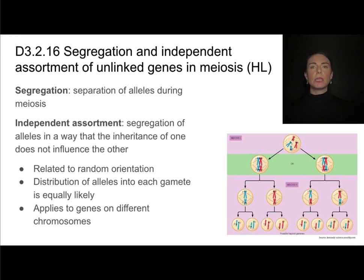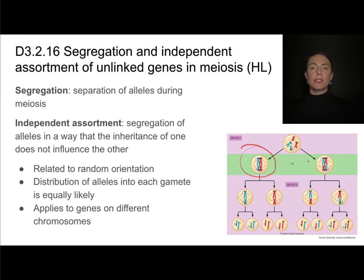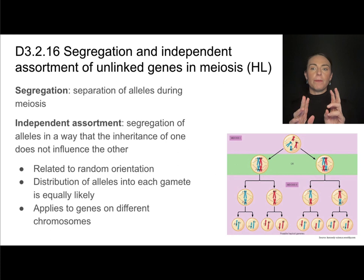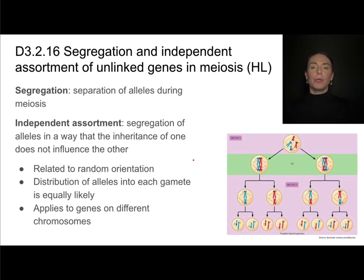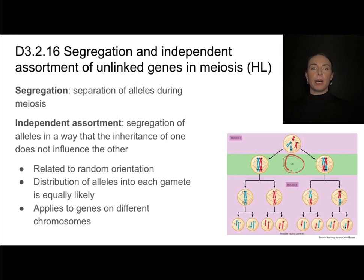This is related to random orientation in metaphase. The alignment in metaphase one of meiosis could look like this, or it could look like this — both alignments are equally possible. The same goes with alignment in meiosis two. These different alignments produce very different combinations of alleles in the gametes, yet all of these are equally possible, which leads back to independent assortment.